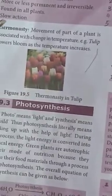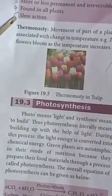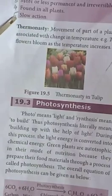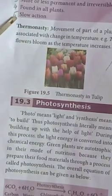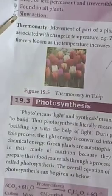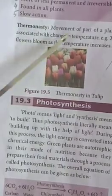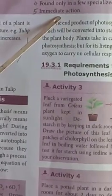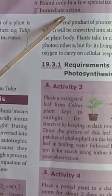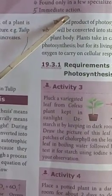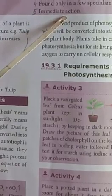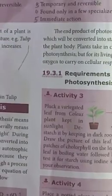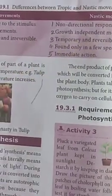Trophic movements are slow in action — for example, phototropism, where the plant shoot bends toward light. Nastic movements are immediate actions. This covers the differences between trophic and nastic movements.